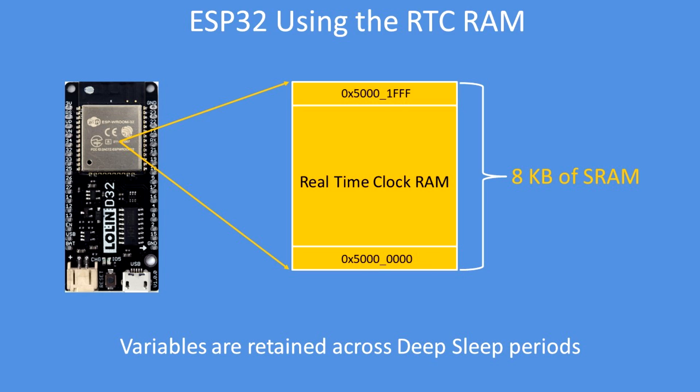In this video I'm going to show you how to use the real-time clock RAM — that's 8 kilobytes of spare RAM that's resident on the ESP32.